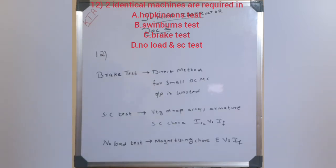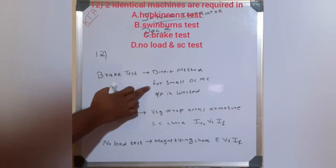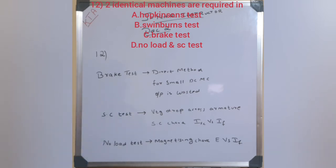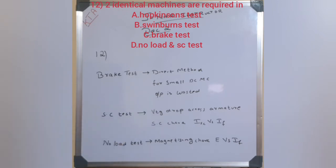The brake test is a direct method used for small DC machines. Unlike Swinburne's test which is an indirect method, the brake test directly measures the output. It is applicable to small DC machines only.